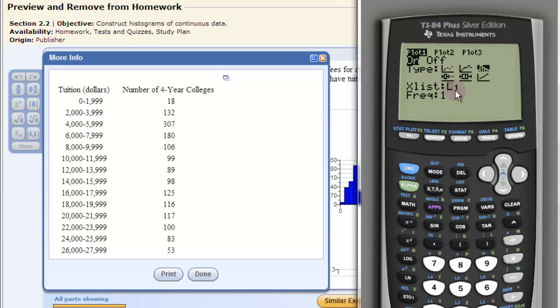So that's going to come from L1. L2 is going to be our frequencies that correspond to those classes. So our frequency is going to be L2. I click second and then the stat key because that's where the lists are, and go down to L2.